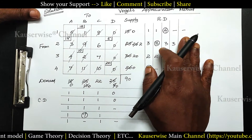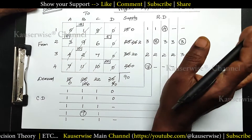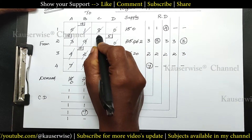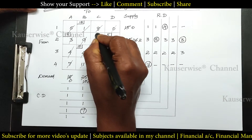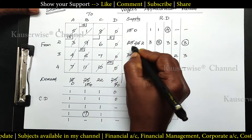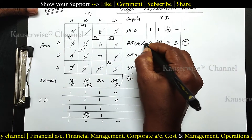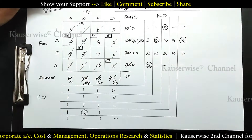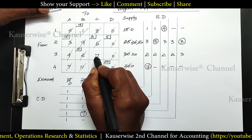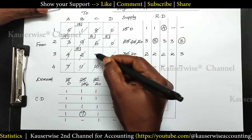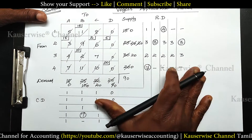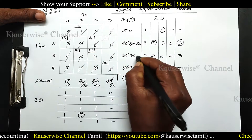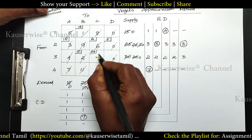We can do column difference for only one particular column, but instead you can apply the least cell method — that is, least cost method. Out of these two remaining figures, 6 is the least value. Select this particular cell and allocate by comparing demand 22 and supply 2 — 2 is the least, so allocate 2 here. This becomes 0 and here you get 20 balance. This particular row gets cancelled. Now we have only one particular cell remaining with equal demand and supply — both are 20. Since it is balanced, allocate 20. Both become 0 and this cell also gets cancelled.